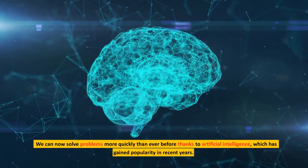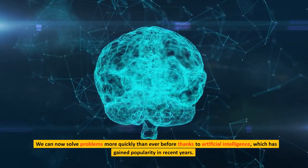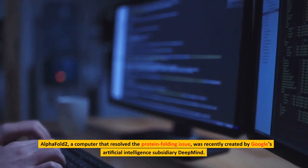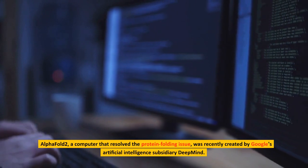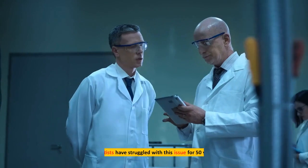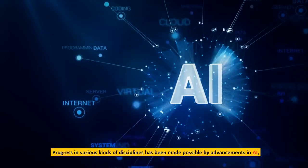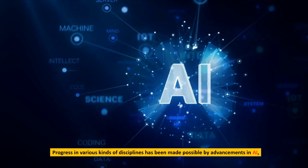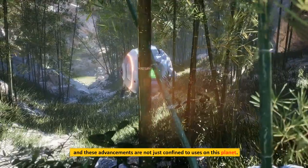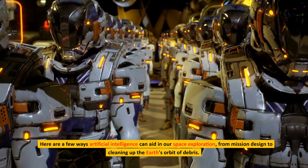We can now solve problems more quickly than ever before thanks to artificial intelligence, which has gained popularity in recent years. AlphaFold 2, a computer that resolved the protein folding issue, was recently created by Google's artificial intelligence subsidiary DeepMind. Scientists have struggled with this issue for 50 years. Progress in various kinds of disciplines has been made possible by advancements in AI, and these advancements are not just confined to users on this planet. Here are a few ways artificial intelligence can aid in our space exploration.